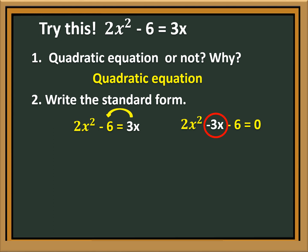Therefore, we will have 2X squared minus 3X minus 6 is equal to 0. Number 3: Find the value of A, B, and C.